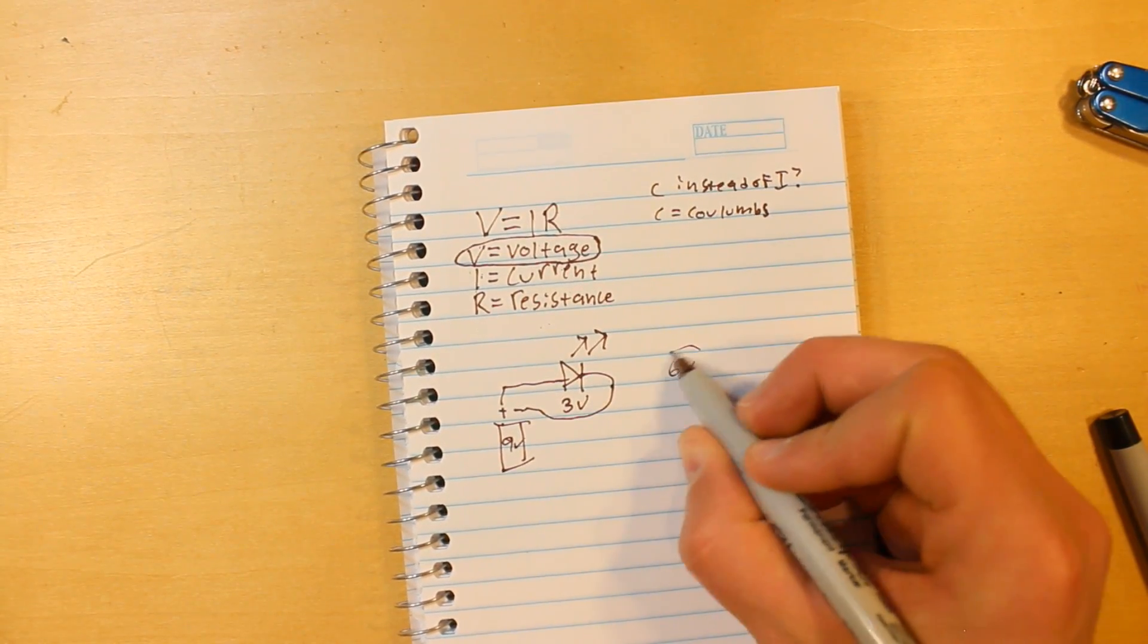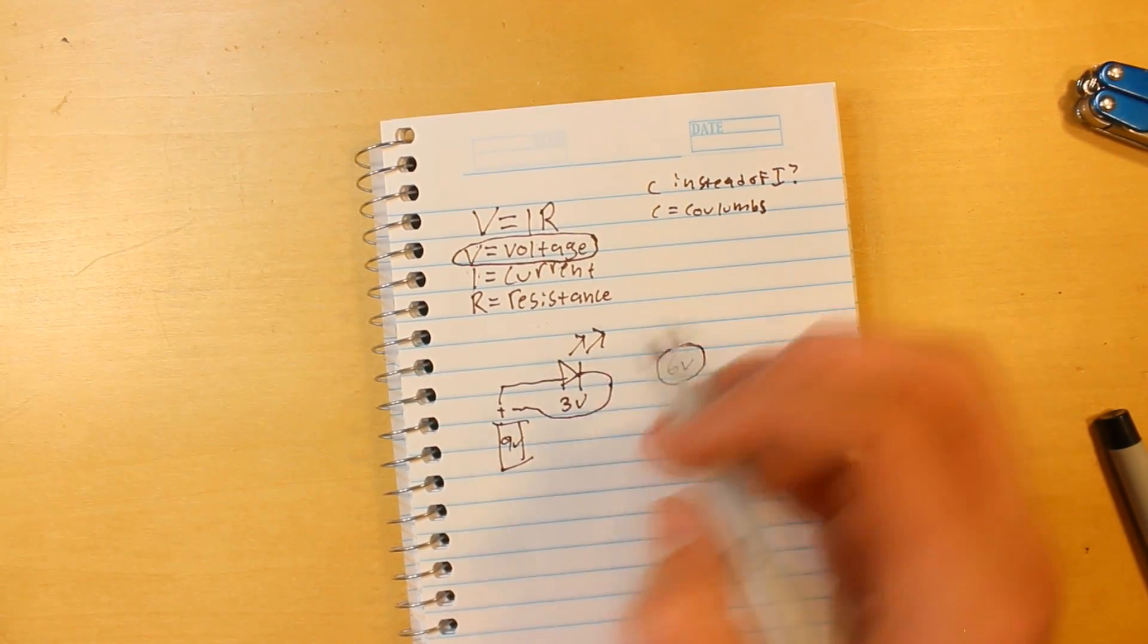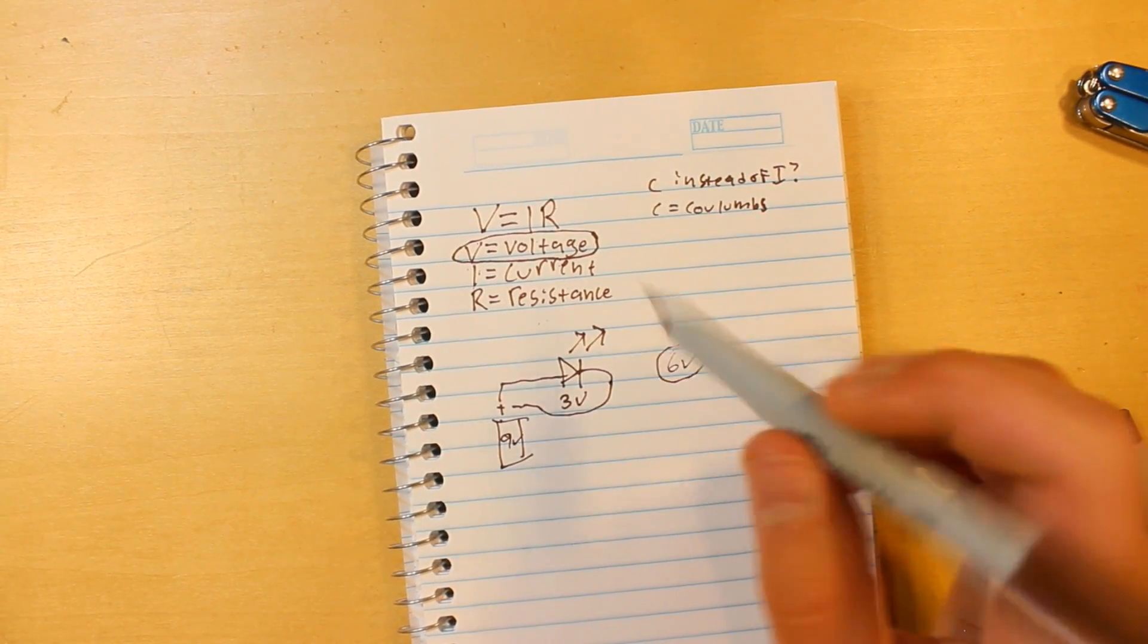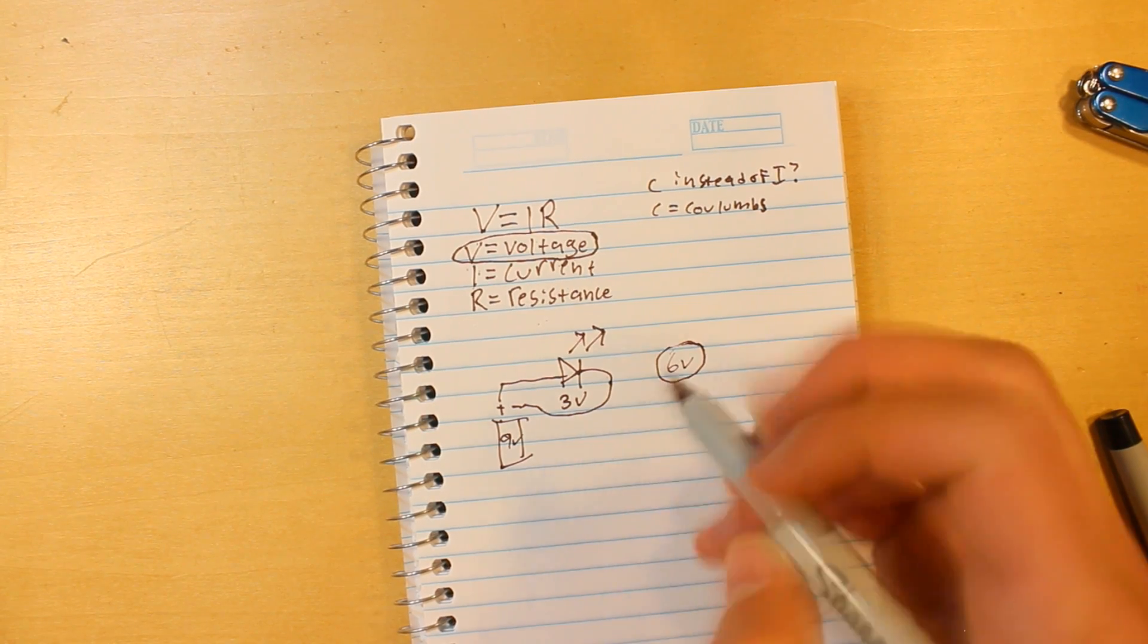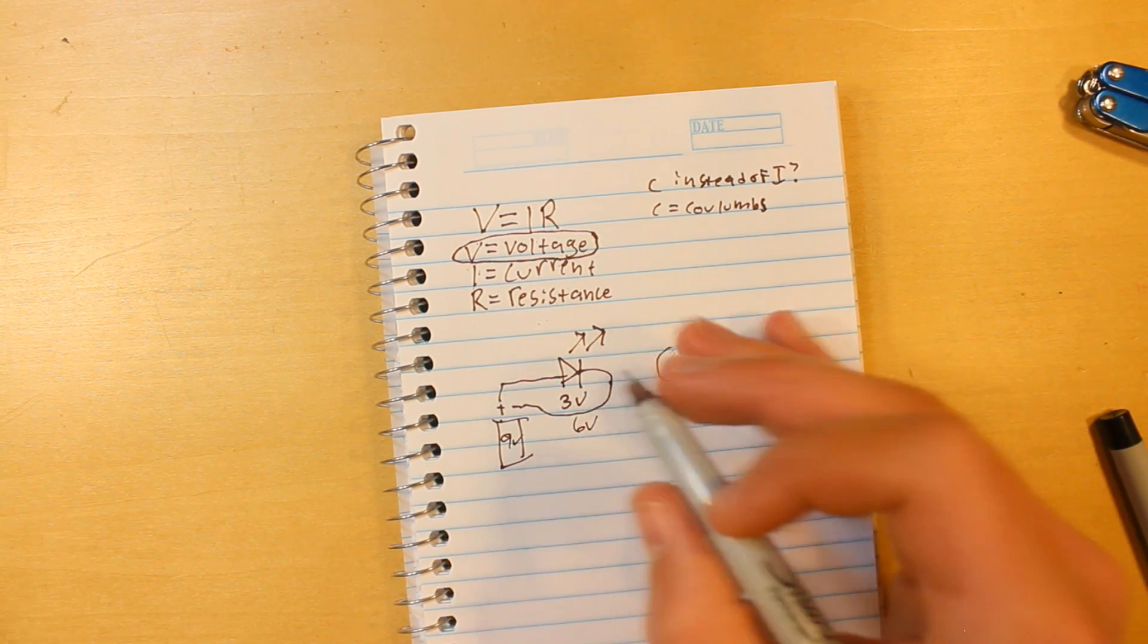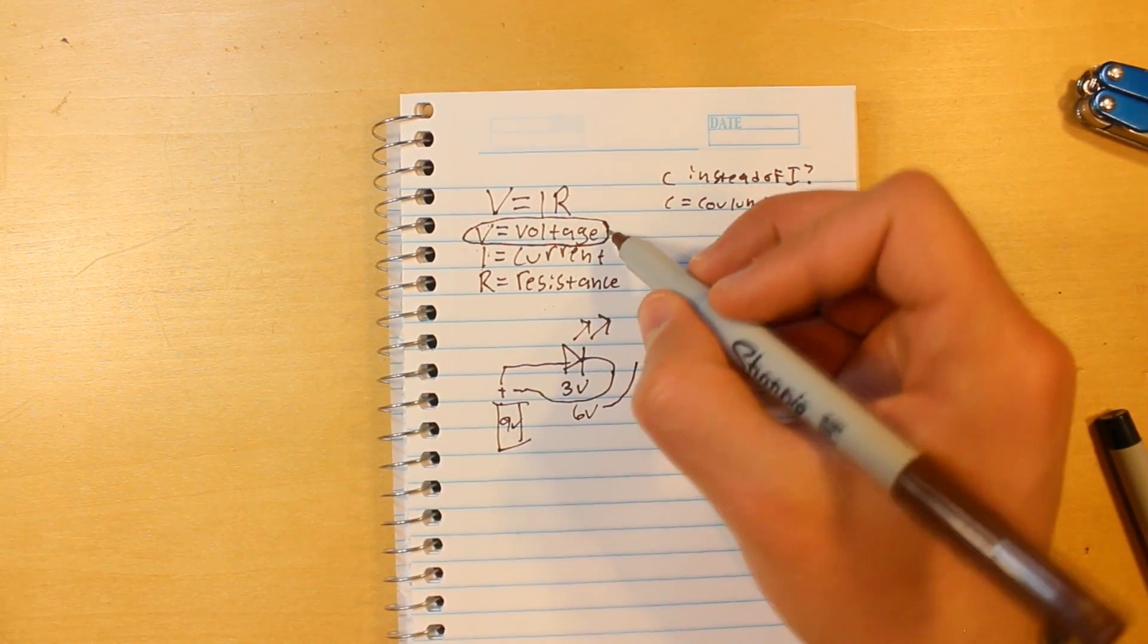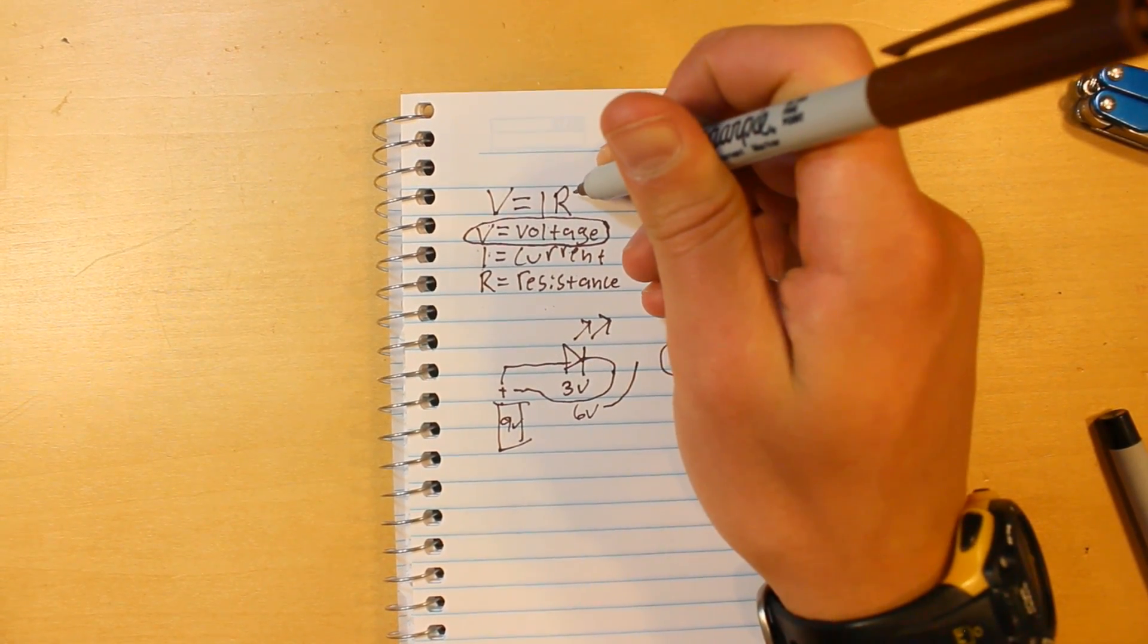So this would actually be the voltage that you plug into the Ohm's Law equation, because in theory, if you had a 3 volt drop across your circuit, you would not have 9 volts running through these wires. You'd only have 6, because this would slow the energy down by 3 volts, so that would be 6 volts running through this wire. That's why you would plug 6 for voltage into Ohm's Law.